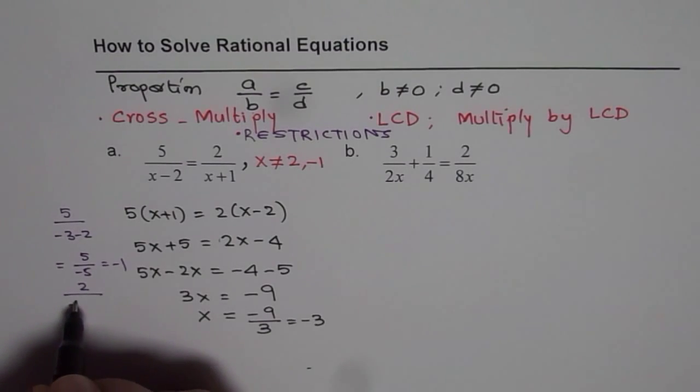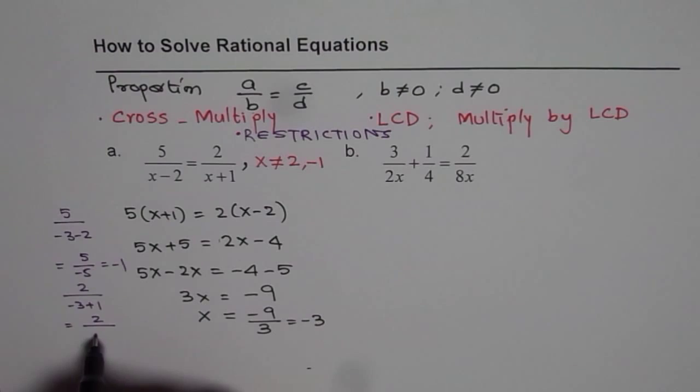If I write minus 3 on the right side, I get 2 over minus 3 plus 1, which is 2 over minus 2, which is also minus 1. So my solution is correct.